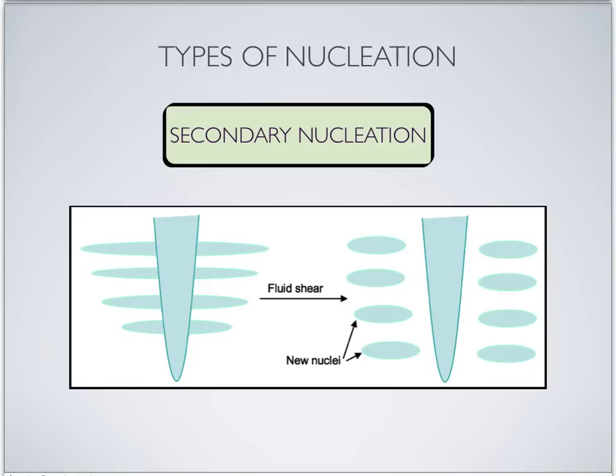Another way new nuclei can form is during agitation in the crystallization vessel: sufficient fluid shear may cause small surface irregularities on the crystal to be sheared off and dispersed into the solution. These fragments now serve as new nucleating sites and will grow further to become stable nuclei.